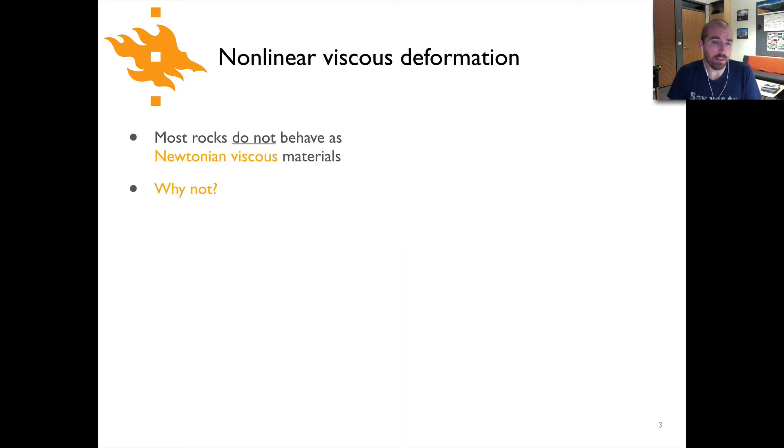Most rocks actually don't behave as Newtonian or linear viscous materials. Rock salt is close to linear viscous but it's sort of unique in that aspect. Most rocks aren't, and so my question for you at this point is can you come up with any reasons why rocks might not be linear viscous materials? Maybe it's easier to think about this in terms of why rocks might not have a constant viscosity perhaps as you go deeper into the earth. So pause the video for a second, think about that and come back when you have an idea.